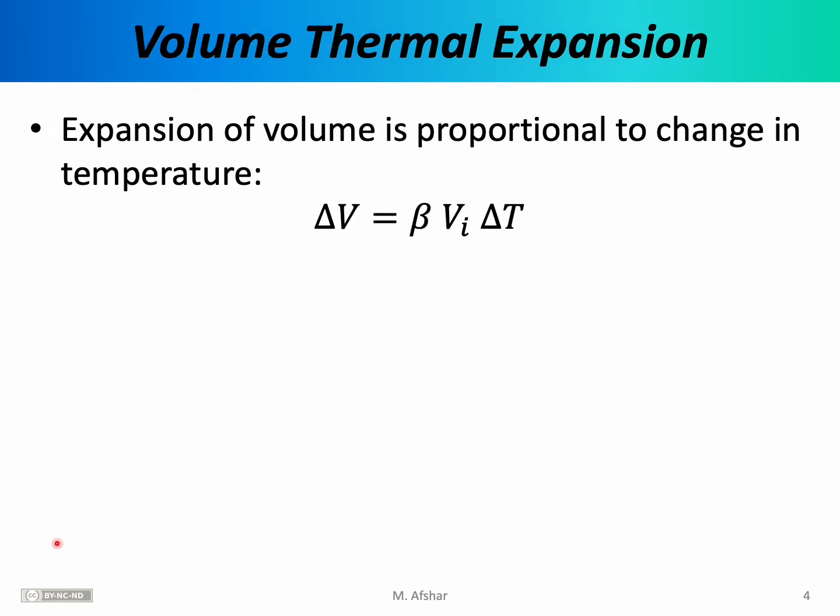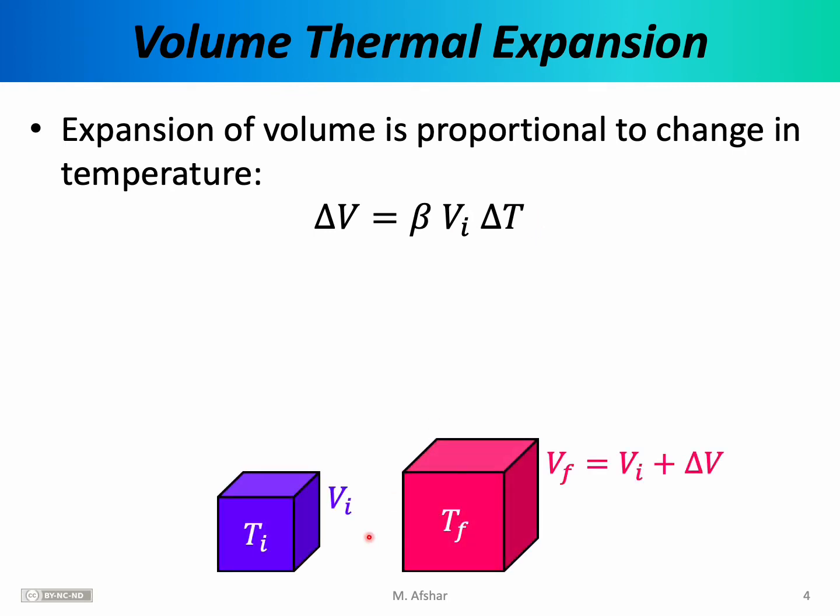Thermal expansion doesn't just change the length of an object, it really changes all dimensions of an object. So the area and the volume of objects change as well. For example, we could talk about the change in the volume of an object in response to a change in its temperature. As before, imagine you have some object, this time we have a three-dimensional object at some initial temperature Ti with some initial volume V sub i. Here you can imagine that this is let's say a block of aluminum and we're going to heat this block of aluminum to some final temperature T sub f.